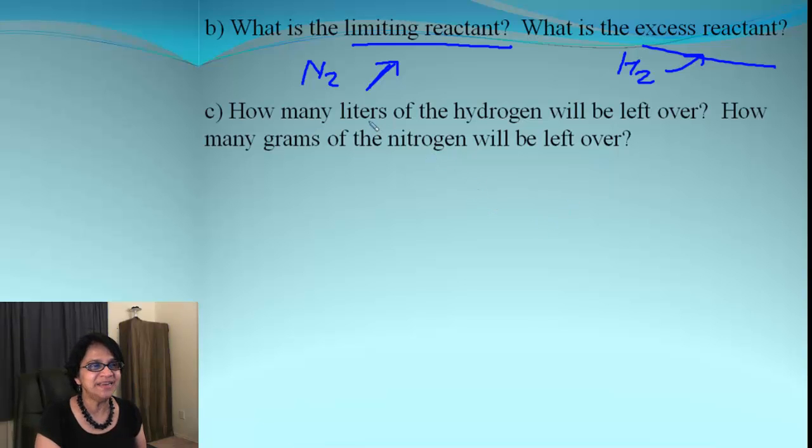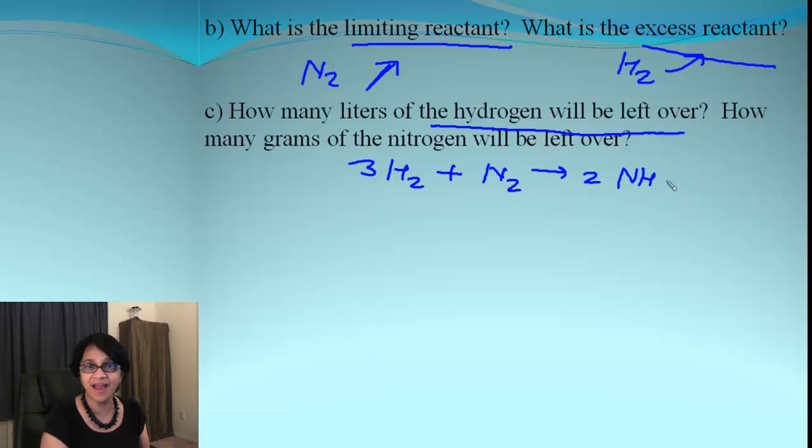And then how many liters of hydrogen will be left over? We need to go back to our reaction for this and do some calculations. So that's the reaction. And we began with 15 grams of nitrogen. So what we are going to do is, we are going to go back from nitrogen to hydrogen and find out how much was used up.